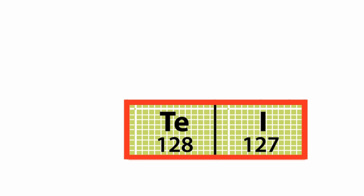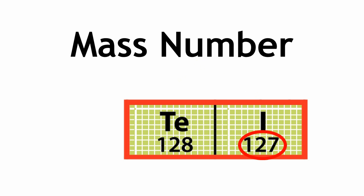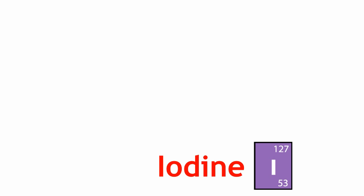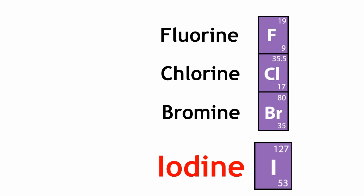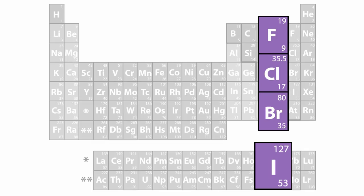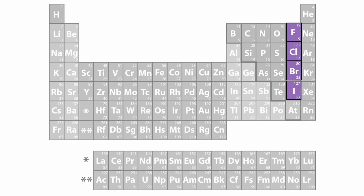iodine, which has a mass of 127, should be put before tellurium, which has a mass of 128. Why? Because iodine has a smaller mass than tellurium. But Mendeleev noticed that iodine has similar properties to fluorine, chlorine, and bromine, so he broke his own rule and put iodine within this column.